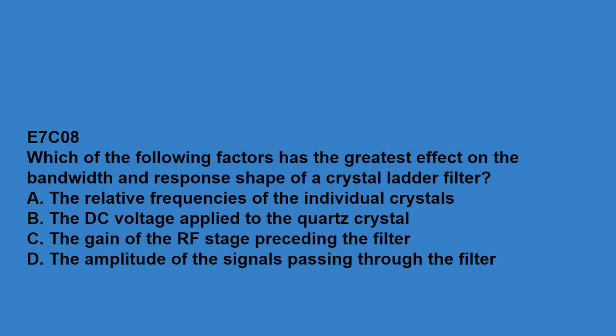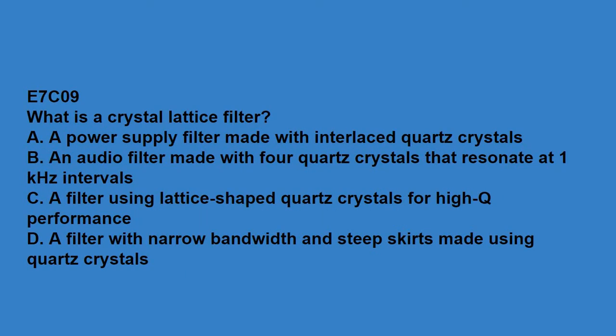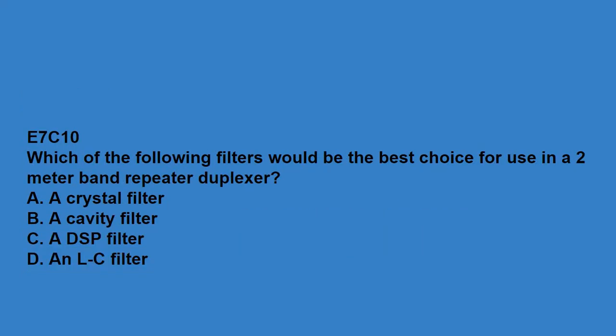E7C07, what describes a pi L network used for matching a vacuum tube final amplifier to a 50 ohm unbalanced output? A pi network with an additional series inductor on the input. E7C08, which of the following factors has the greatest effect on the bandwidth and response shape of a crystal ladder filter? The relative frequencies of the individual crystals. E7C09, what is a crystal lattice filter? A filter with narrow bandwidth and steep skirts made using quartz crystals.